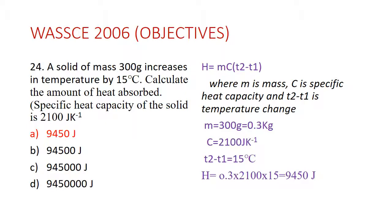T1 represents the initial temperature and T2 is the final temperature. From the question, the mass is 300 grams, which converts to 0.3 kilograms. The specific heat capacity is 2100, and the temperature change from the question is 15 degrees Celsius. Substituting into the formula, the final answer is 9,450 joules, which is answer A.